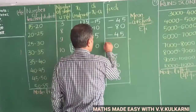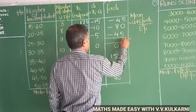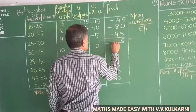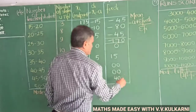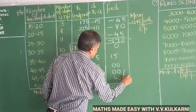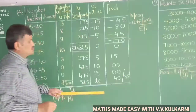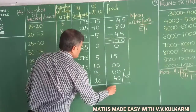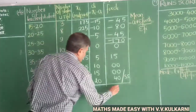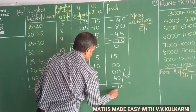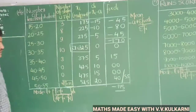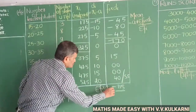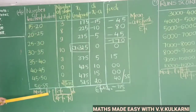Adding the negative values: minus 45, minus 80, and minus 45 sum to minus 170. Adding the positive values: 15 plus 0 plus 0 plus 40 gives plus 55. Therefore, Σfi·di equals minus 170 plus 55, which is minus 115.